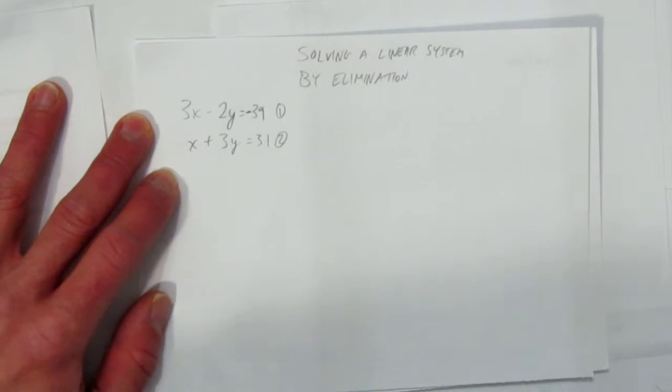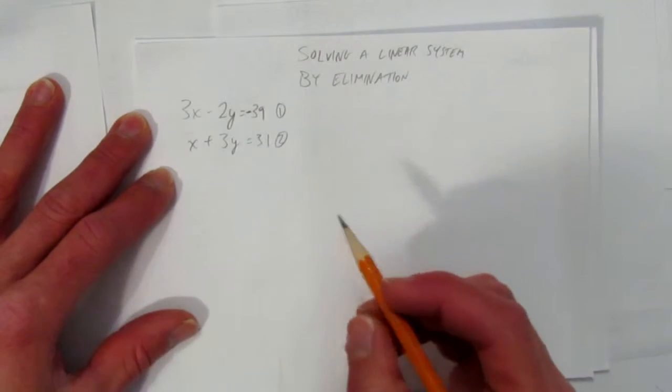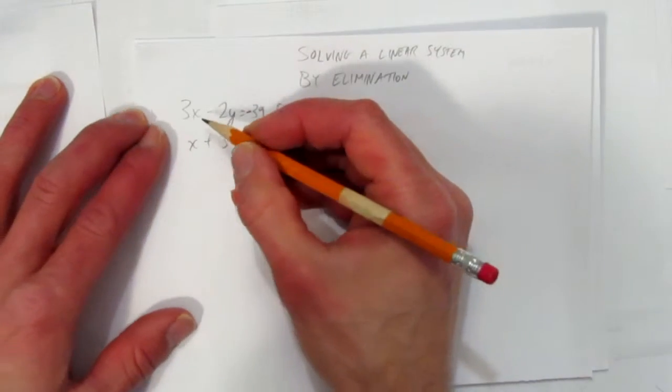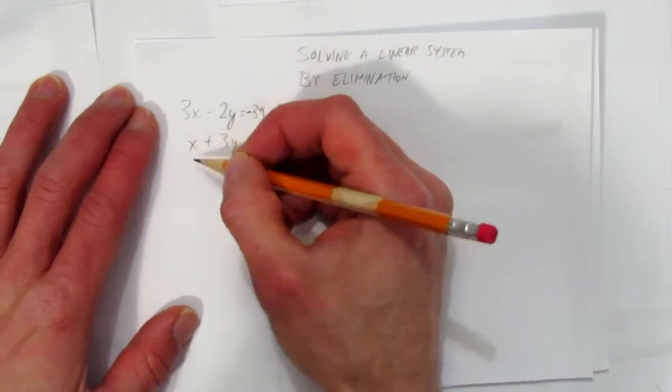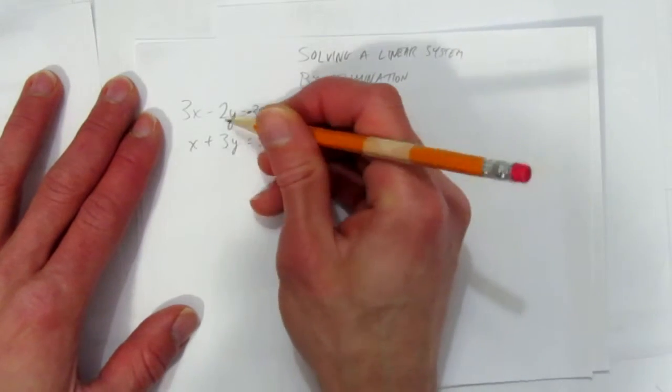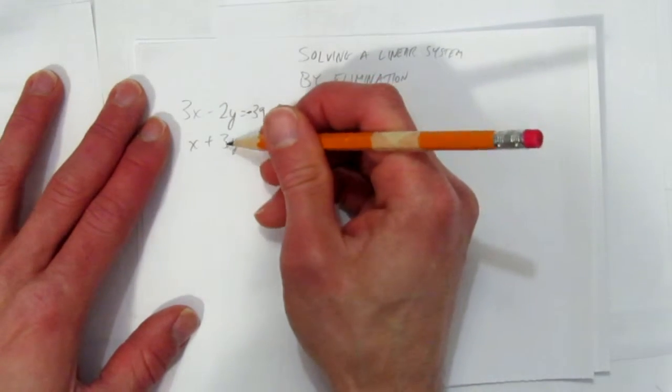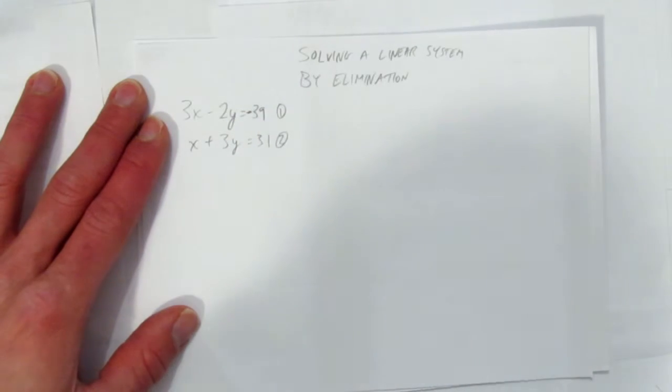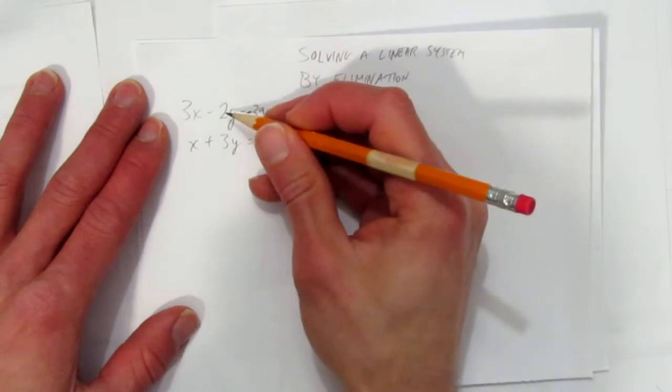Those two equations have two unknowns, and we'll solve them by elimination. To do that, we need to have the same coefficient on the x's or on the y's. Well, if we did the y's, we'd have to make them both 6, because you can't make a 2 into a 3 very easily, or a 3 into a 2. We can do that, but it would be two steps.